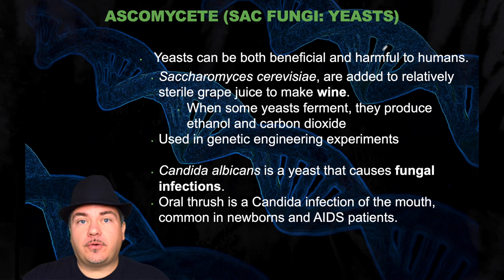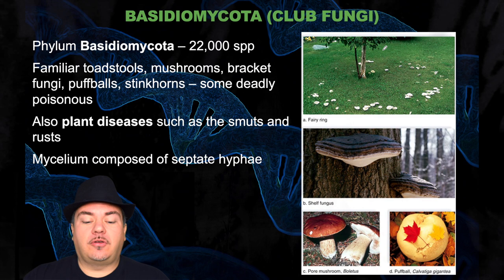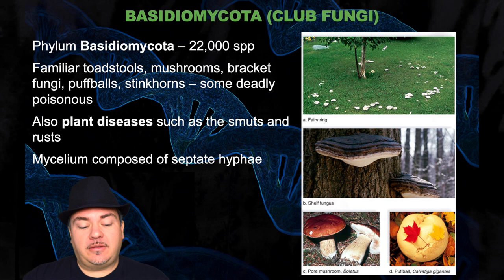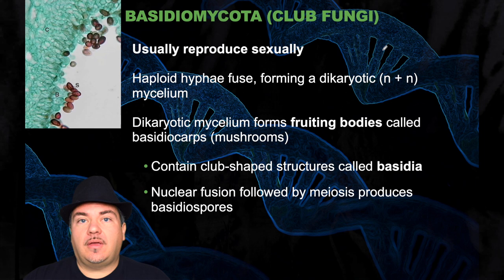The next phylum is the basidiomycetes, also known as club fungi. This has about 22,000 species. This is the familiar toadstools, mushrooms, bracket fungi, and puffballs. Some are deadly poisonous. Also included are plant diseases such as smuts and rust. Their mycelium is composed of septate hyphae. They usually reproduce sexually — haploid hyphae fuse forming a dikaryotic mycelium. The dikaryotic mycelium forms fruiting bodies called basidiocarps, which are mushrooms.